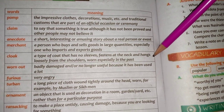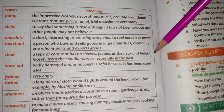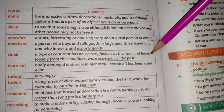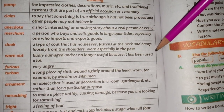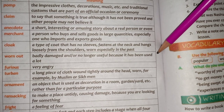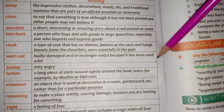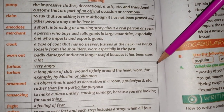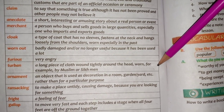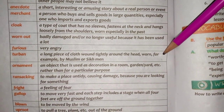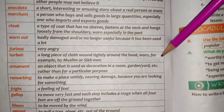Next, Cloak (Choga) — a type of coat that has no sleeves, fastens at the neck and hangs loosely from the shoulders, worn specially in the past. Worn out (Ghisa Purana) — badly damaged or no longer useful because it has been used a lot. Furious (Ghussa, Ghazabnaak hona) — very angry. Turban (Pagdi) — a long piece of cloth worn tightly around the head, worn for example by Muslim or Sikh men.